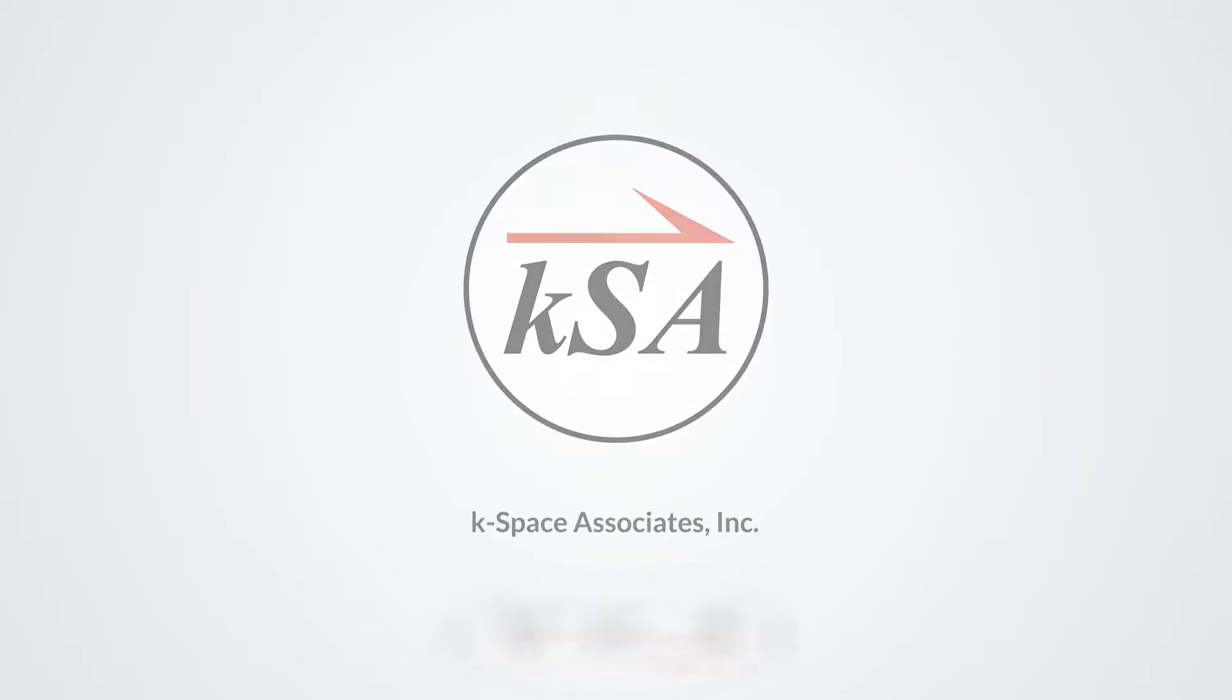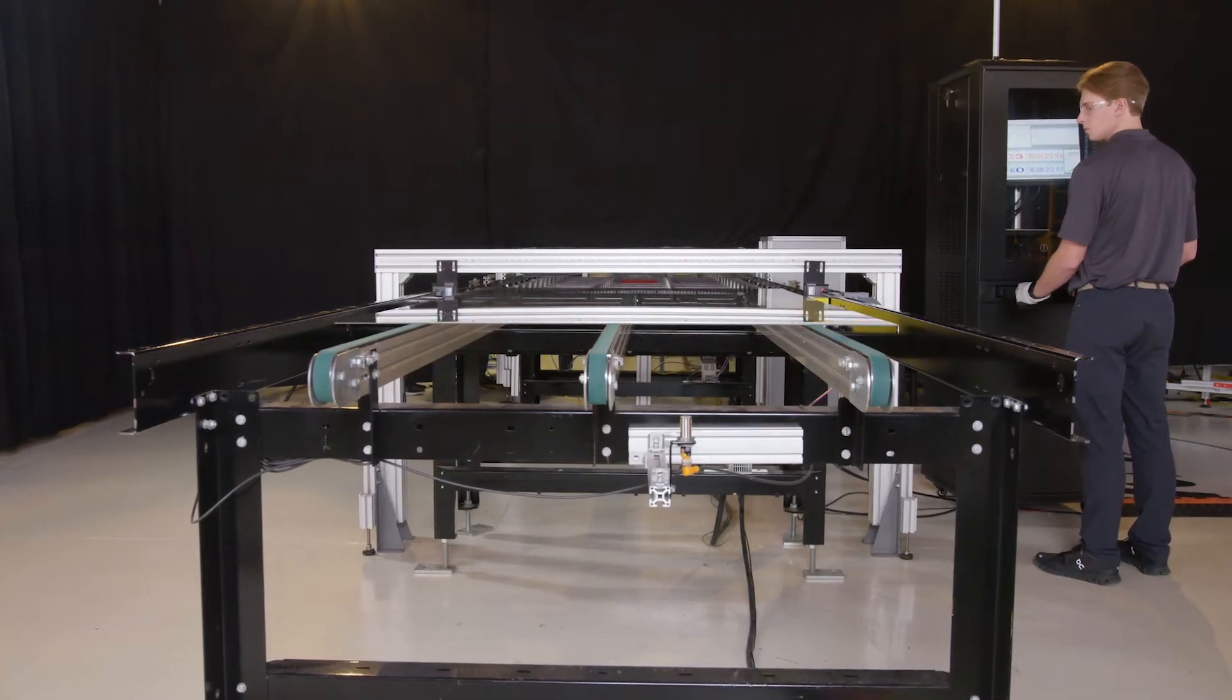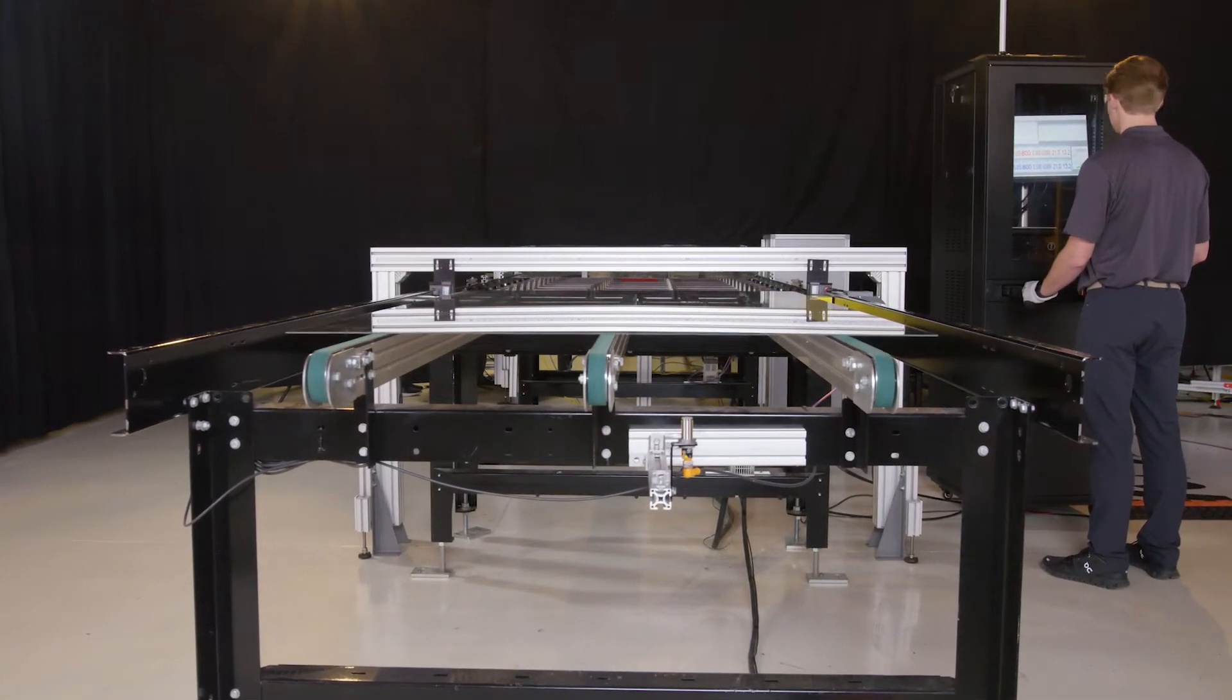The K-Space Panel Edge Profiler is a non-contact profilometer used for inline edge inspection of glass and other thin industrial panels. It helps monitor and control overall manufacturing performance and product quality.